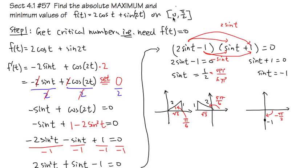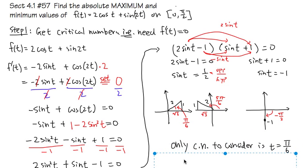However, since we are only considering the interval [0, π/2], we can only use critical numbers within this interval. Both 5π/6 and -π/2 are outside this interval, so the only critical number to consider is t = π/6.